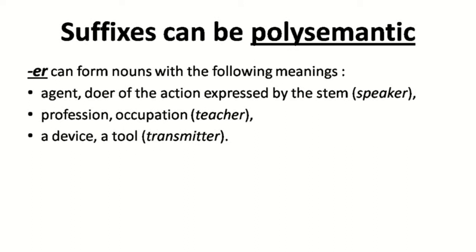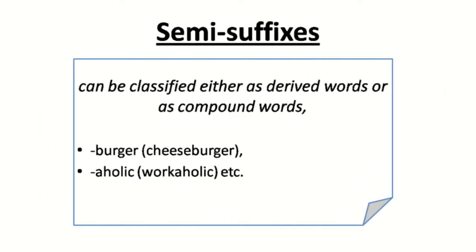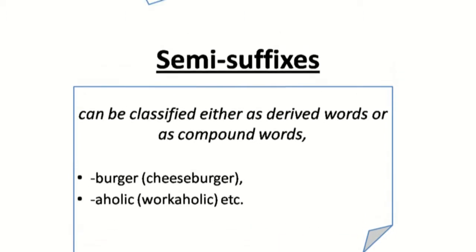Suffixes can be polysemantic, meaning one suffix can have several meanings. For example, the suffix '-er' denotes the agent of the action (e.g., 'speaker'), a profession or occupation (e.g., 'teacher'), and also a device or tool (e.g., 'transmitter'). There are also compound suffixes — for example, '-able', '-ation' as in 'adaptation' from 'adapt', and '-ably' as in 'reasonably'. Semi-suffixes are called so because some scientists regard them as suffixes while others regard them as roots or stems. For example, '-burger' in 'cheeseburger' — some say it is a suffix, others say 'cheese' and 'burger' are two stems.